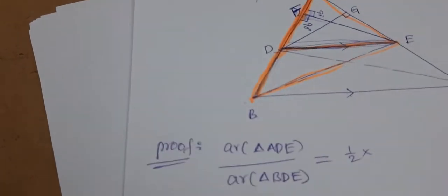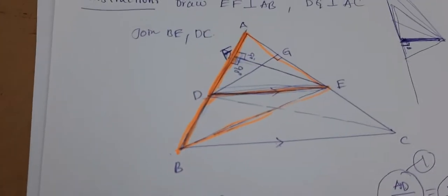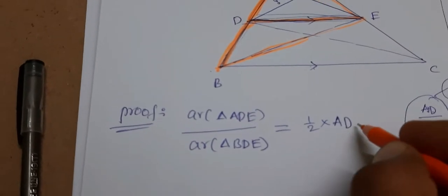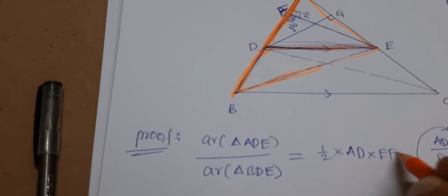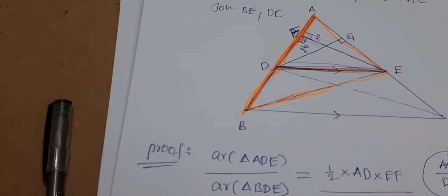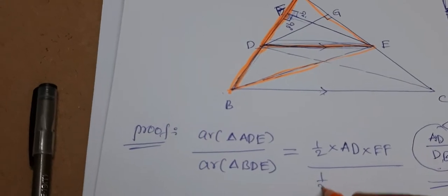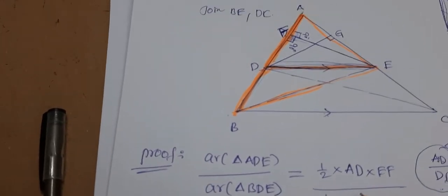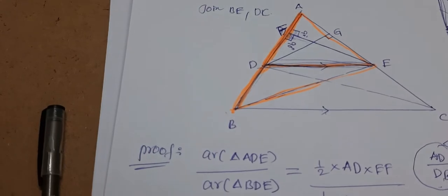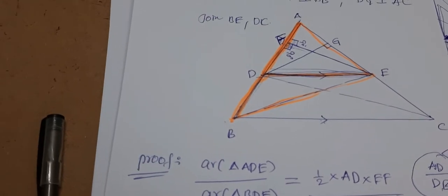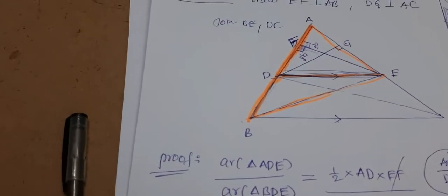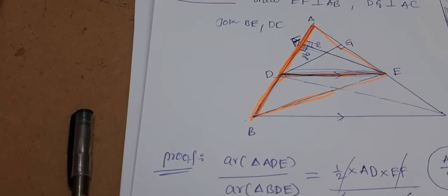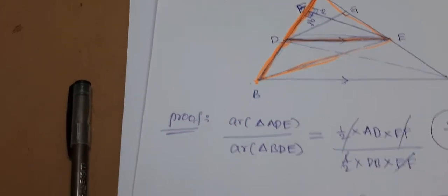So the ratio is: (½ × AD × EF) divided by (½ × BD × EF). The half and EF cancel from numerator and denominator. So we get AD/DB. This is Equation 1.